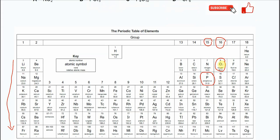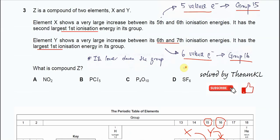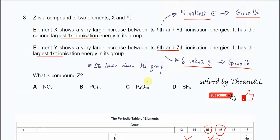So we are quite sure that element X is phosphorus and element Y is oxygen. We need to find a compound with these two elements. In this question, only option C shows phosphorus and oxygen together. Therefore, the compound Z is phosphorus oxide — P₄O₁₀. That's all, thank you.